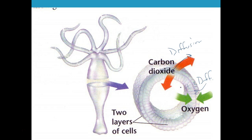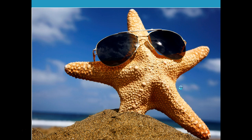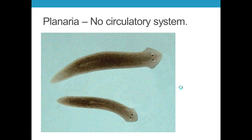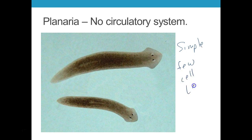Other organisms that do not have a circulatory system include sea stars and the planaria. That is because they are simple and have few cell layers. Diffusion works just fine for these things because every cell in their body is in close contact with their environment.